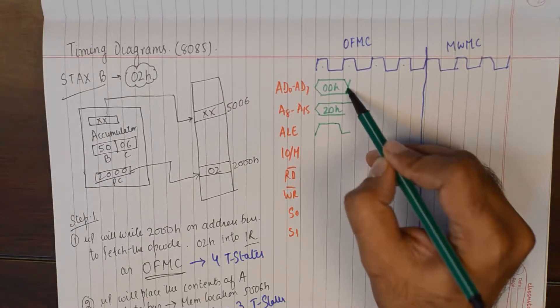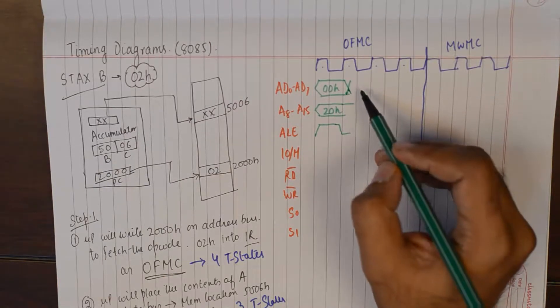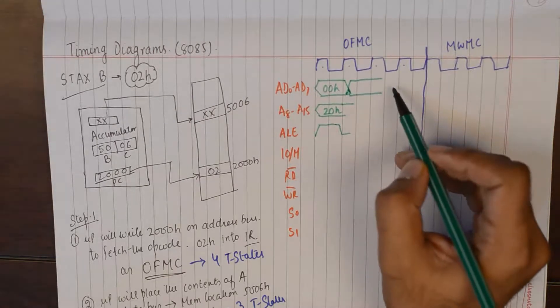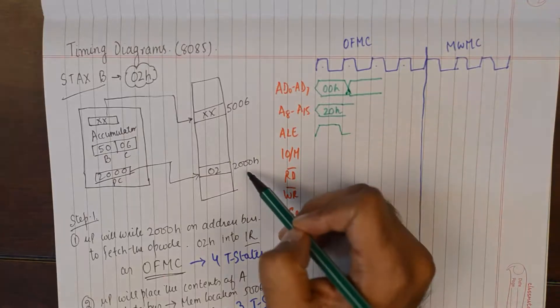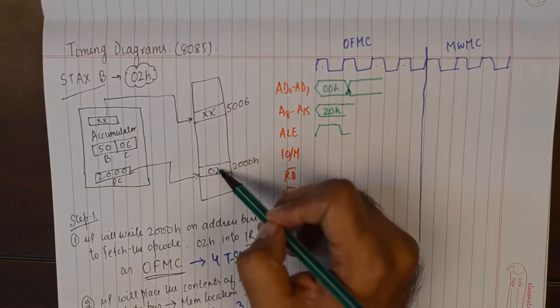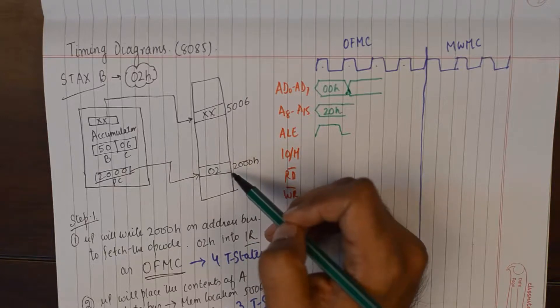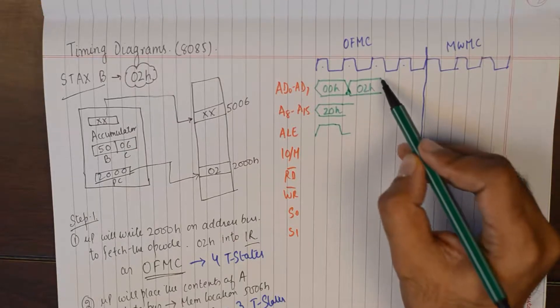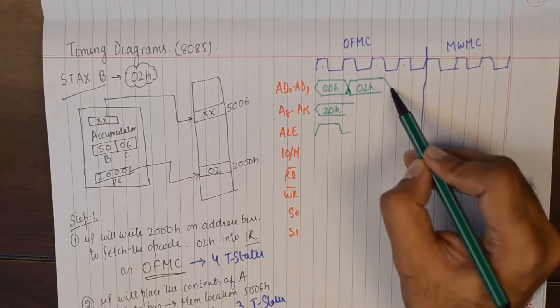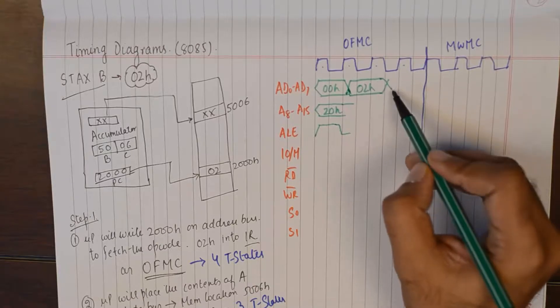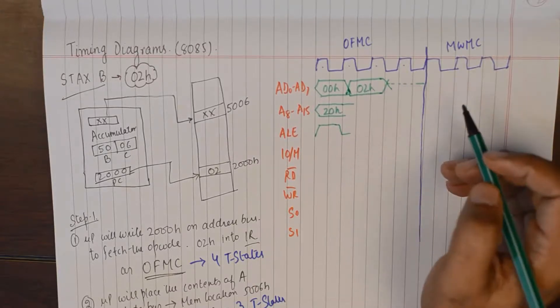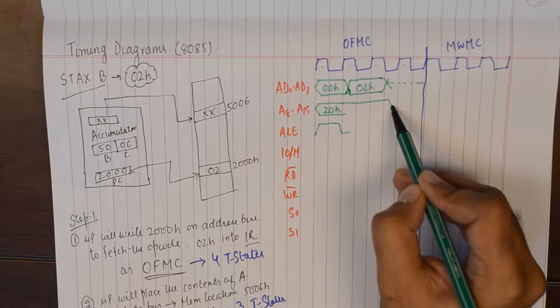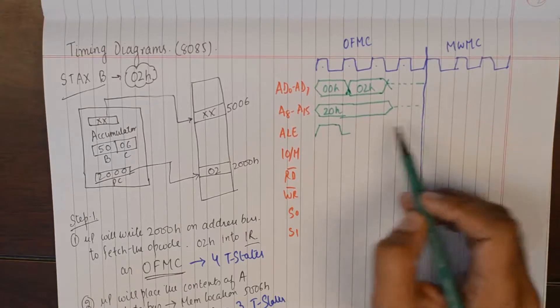So that will make these lines as address lines, and then they become data lines. They will carry the content of the location 2000H which actually is the opcode. So we will bring the opcode 02H into the microprocessor in the third T state. And then we will let it decode in the fourth T state. And same goes with the higher order address bus.